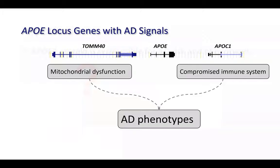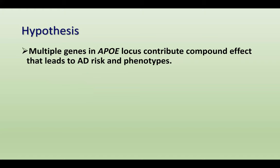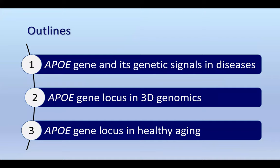We modified our hypothesis: multiple genes in the APOE locus contribute a compound effect that leads to AD risk and phenotypes. The immediate question is: what is the mechanism of such a multi-gene effect from a single locus? We're talking about a single site but multiple gene effects. Is there an established model or mechanism that can explain this? That leads us into the second part of the talk about 3D genomics.